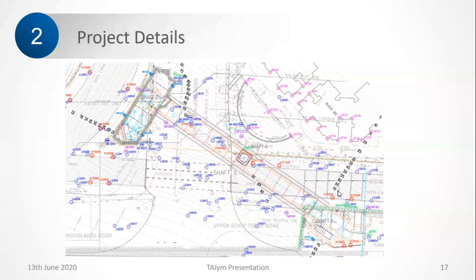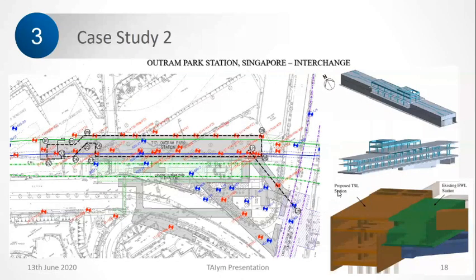Now I'll move on to the next case study. I will show more photos from case study one if there are questions. Case study two is again from Singapore — it's from the Thomson Line. These are two existing stations: EWL and NEL. A new station constructed here is called the Thomson Line.